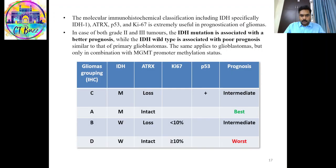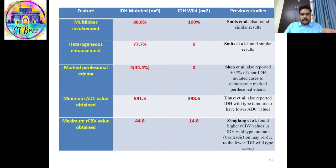This prognostic grading shows four groups based on IHC markers: group A (IDH mutant, ATRX intact) with the best prognosis, and group D (IDH wild-type, ATRX intact) with the worst prognosis. These findings are in concordance with previous studies.